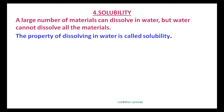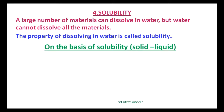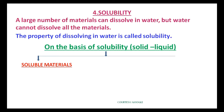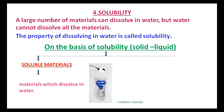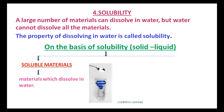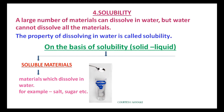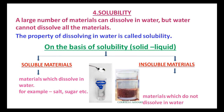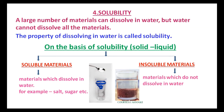On the basis of solubility of solid in liquid, materials are divided into soluble materials and insoluble materials. Materials which dissolve in water are soluble materials — for example, salt, sugar, etc. Materials which do not dissolve in water are insoluble materials — for example, sand, stone, mud, etc.